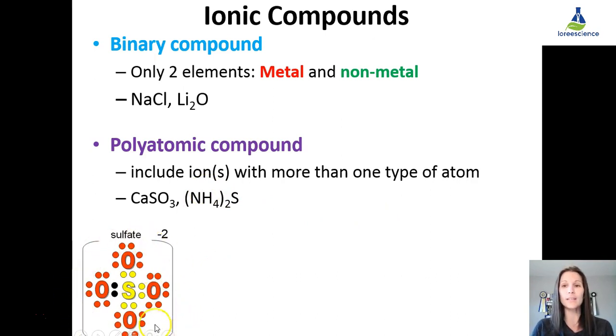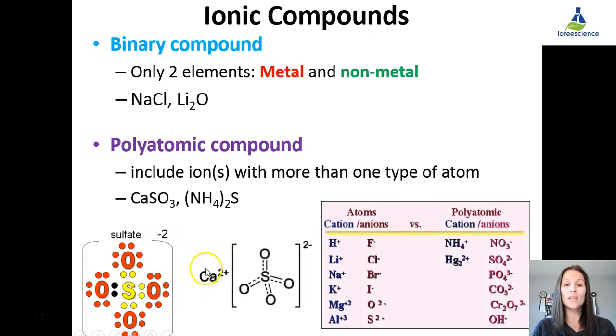If we want to look at that sulfate, what that actually looks like is you have four elements here that are actually covalently bound to each other, but as a whole, they count as an ion with a negative two charge. You would have the calcium binding to the sulfate as a whole, as a single entity or an ion.